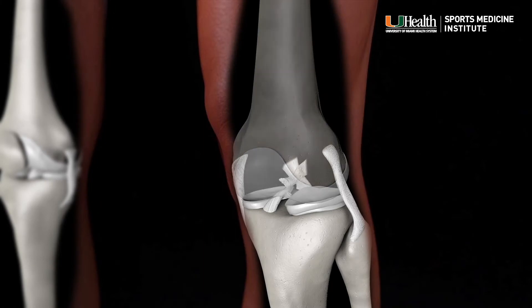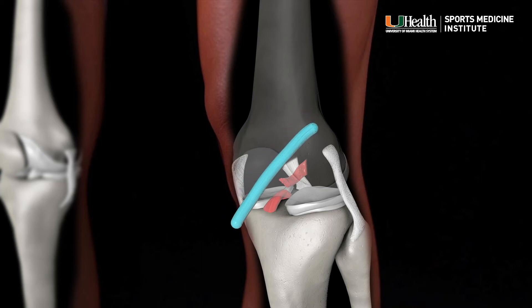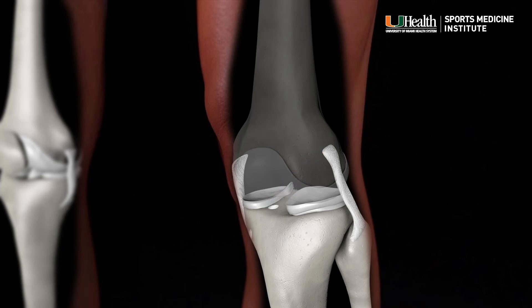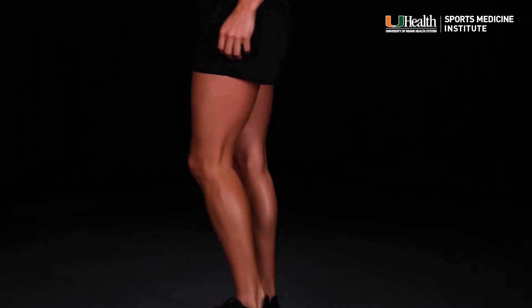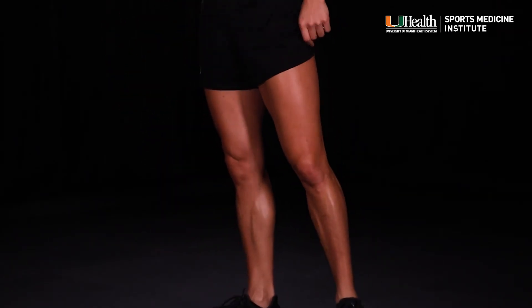Because the two ends of a torn ACL won't heal back together, surgical reconstruction using a graft is the only option to restore knee stability and function. During minimally invasive arthroscopic surgery, the torn ACL is removed and a graft is attached to the bones in its place.